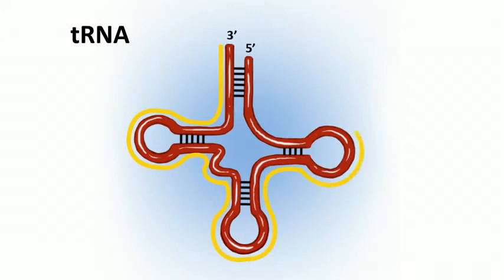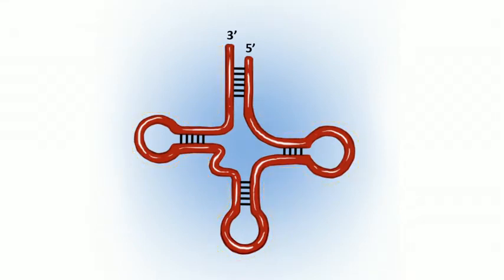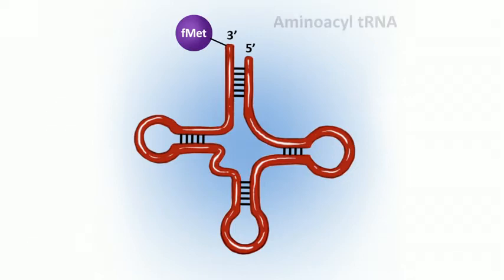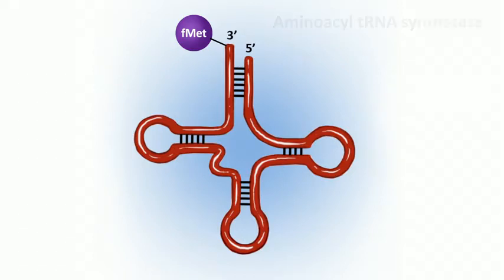In order to start building a polypeptide, you need to attach an amino acid to each tRNA molecule. We say that the tRNA has been charged with an amino acid — we call that molecule aminoacyl-tRNA. The enzyme that does the charging is called aminoacyl-tRNA synthetase, and that's an enzyme worth knowing. That charging process requires energy, so it uses ATP.